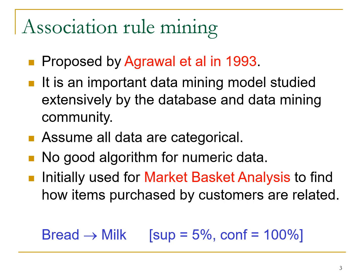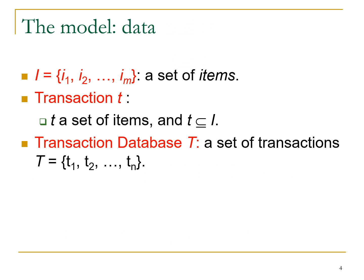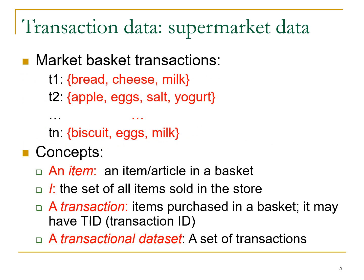When customers buy bread, there is a possibility of buying milk — that is one example from market basket analysis. Technically, we consider a set of items named I, which is {i1, i2, ..., im} — m number of items. A transaction T is a set of items that is a subset of I. The transaction database, named capital T, is a collection of transactions T1, T2, up to Tn.